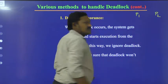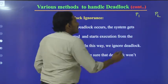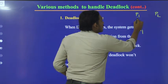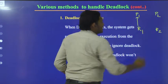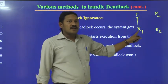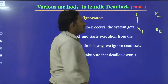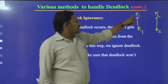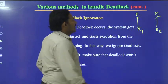If there are two processes, P1 and P2, and two resources R1 and R2 — process P1 is holding R1 and process P2 is holding R2. So P1 is holding R1 and P2 is holding R2.